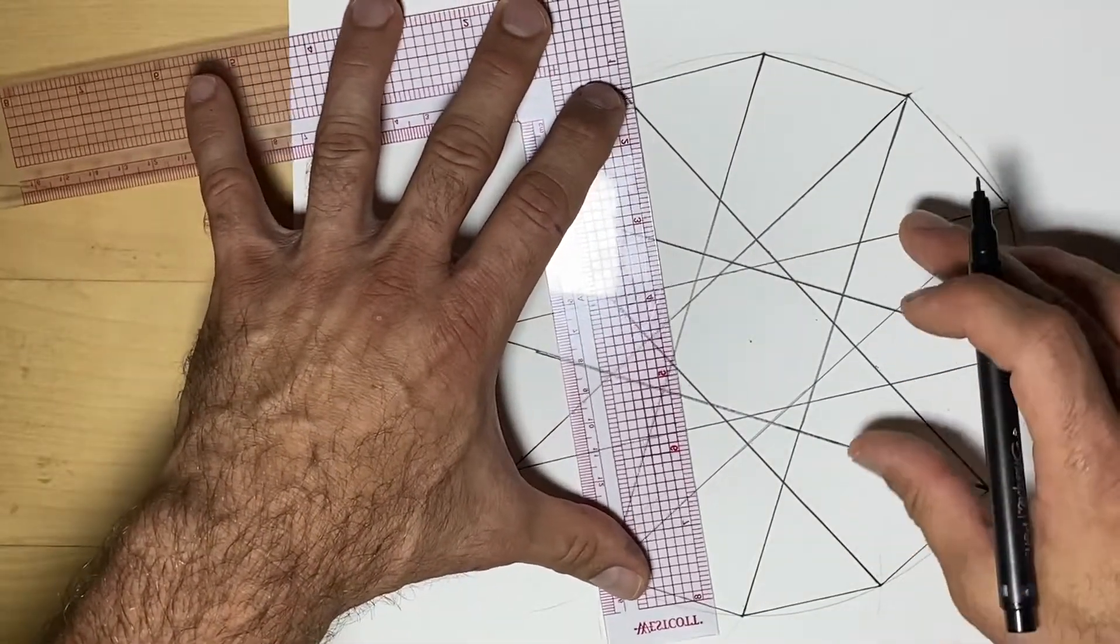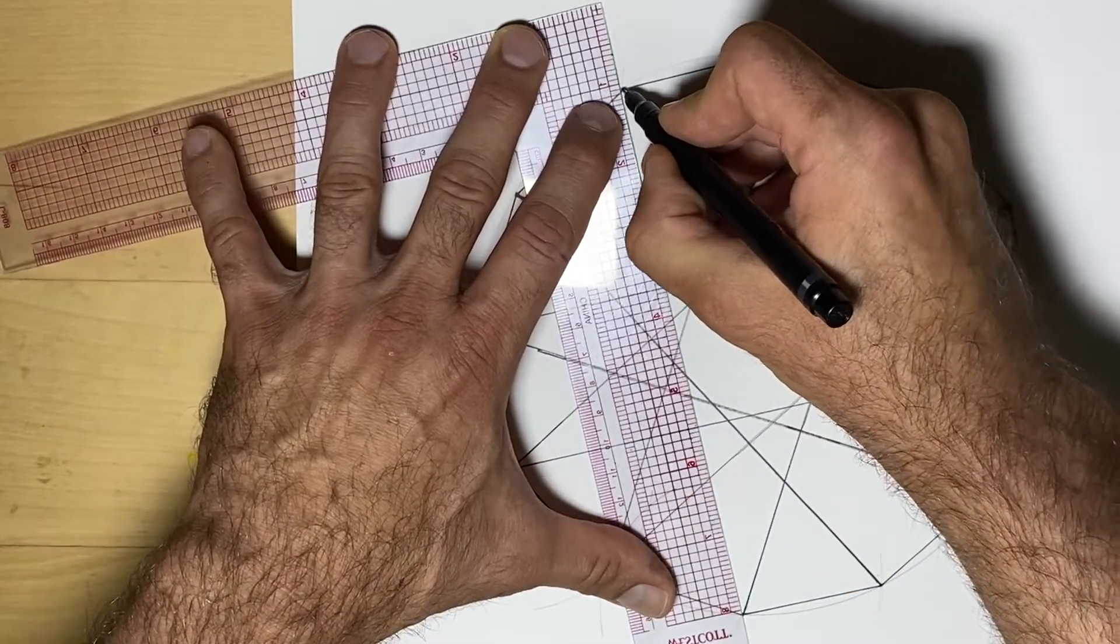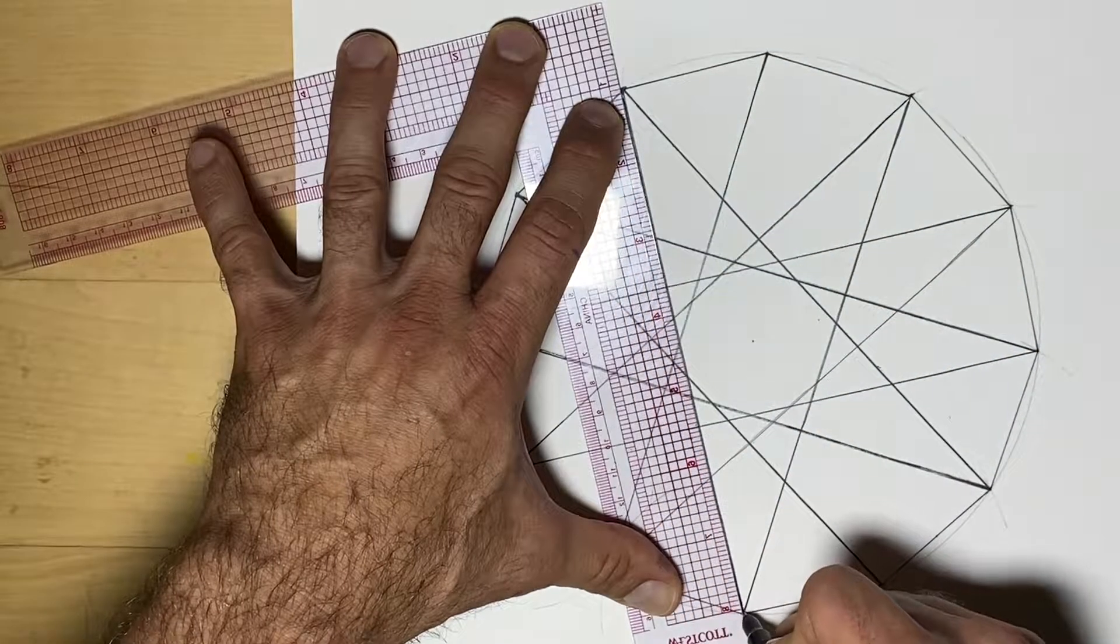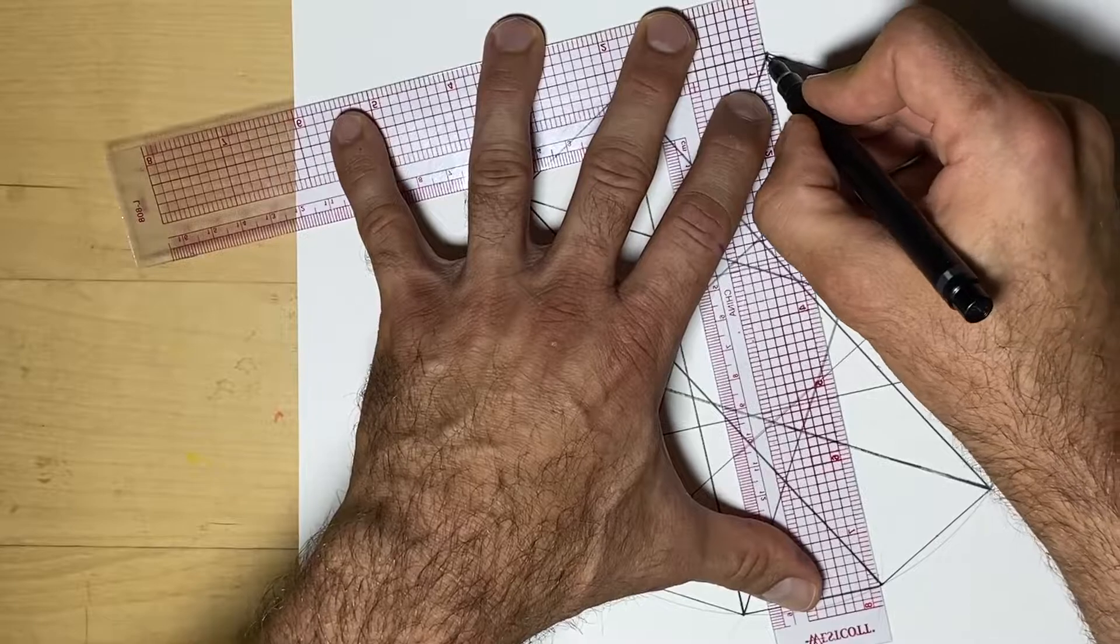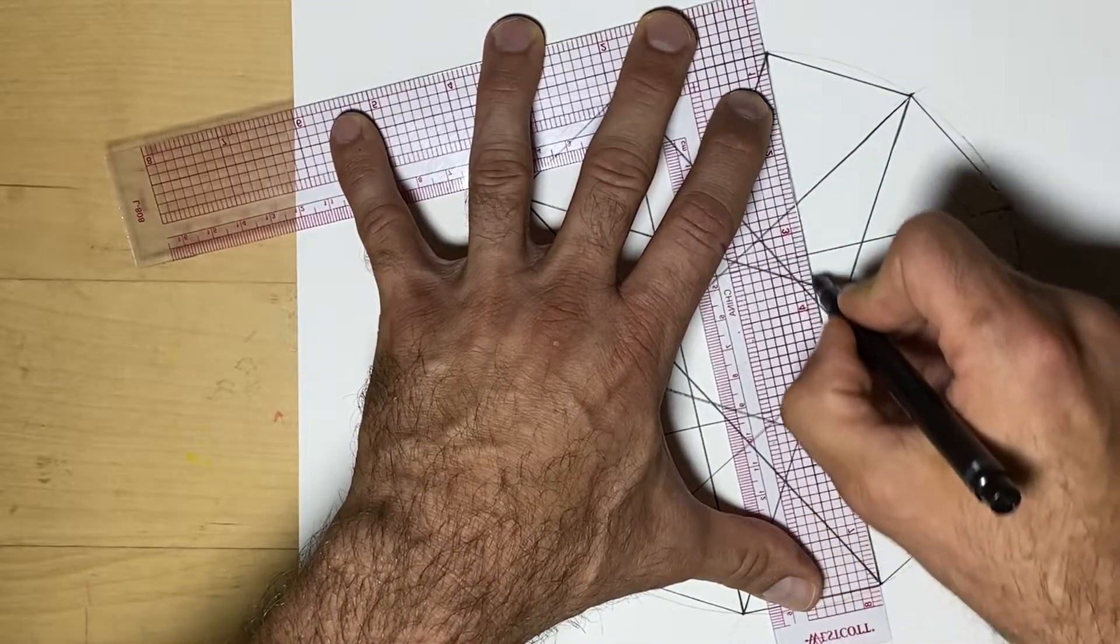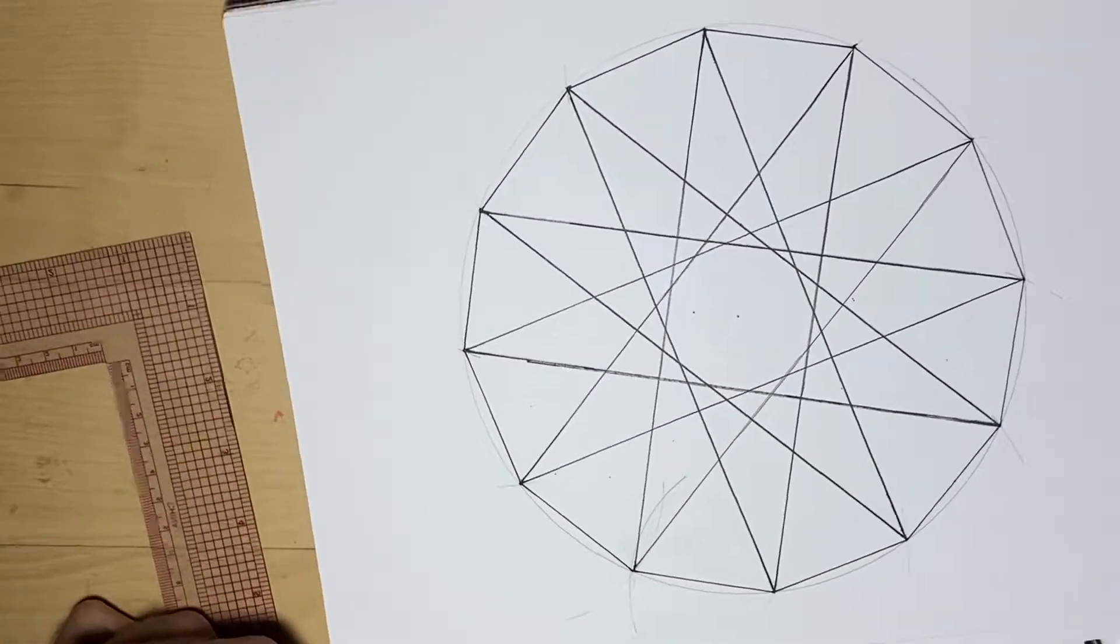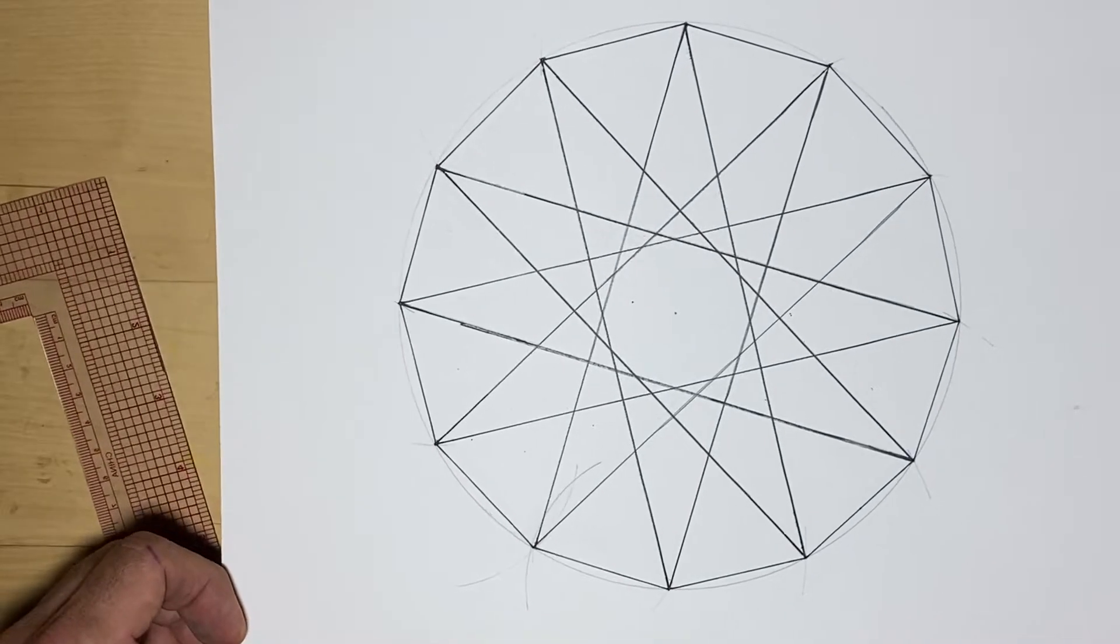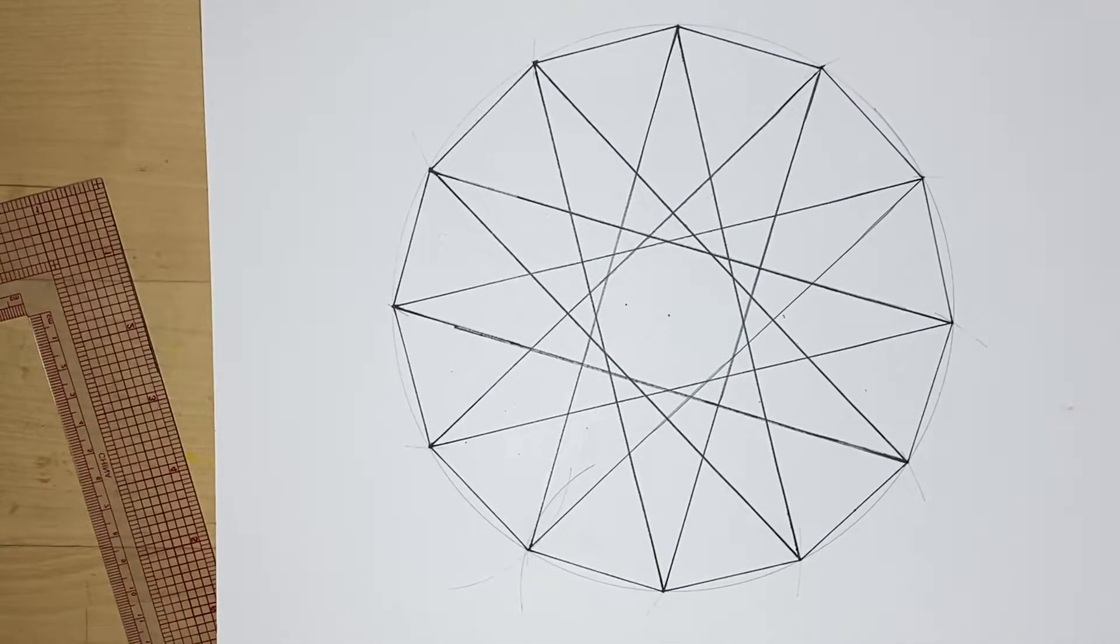And we're almost done here. And we've got that beautiful 12-sided star. So that is how we do a dodecagram, a 12-sided star.